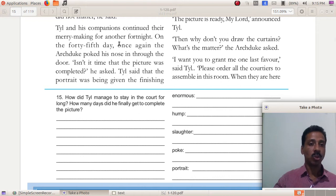Till and his companions continued their merry making for another fortnight. Fortnight refers to a period of two weeks. On the 45th day, the Archduke came there again and asked, isn't it time that the picture was completed? Till said that the portrait was being given the finishing touches, almost complete, only the last few strokes.